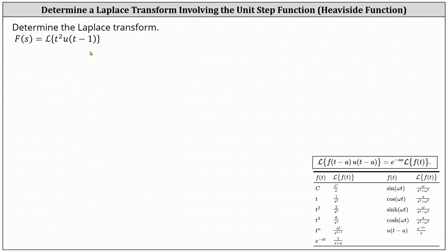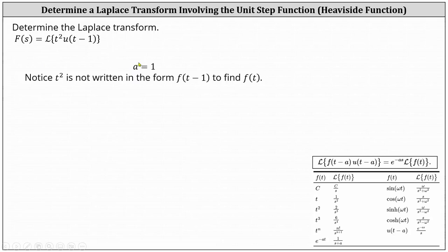Analyzing the given function, because of the u of the quantity t minus one, we know a is equal to one. However, notice t squared is not written in the form of f of the quantity t minus one, so that we can easily determine f of t and therefore perform a change of variables.